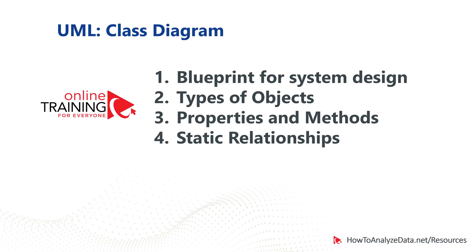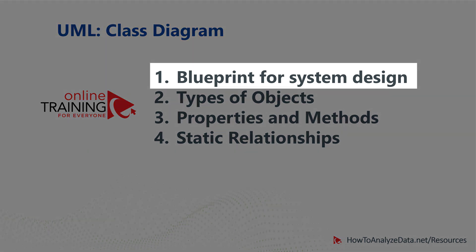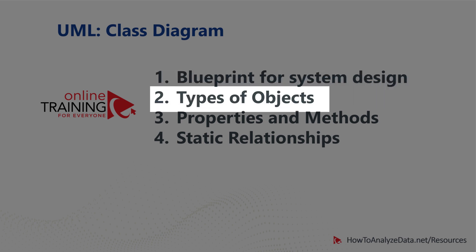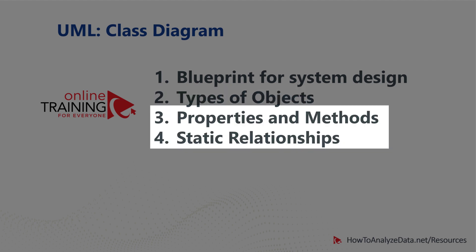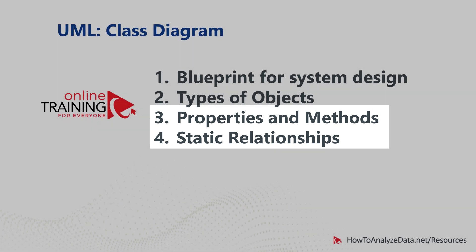What is a UML Class Diagram, and why do we need it? A UML Class Diagram is intended to provide a blueprint for an entire system design. This blueprint works very well regardless of which programming language you use to build your system. UML Class Diagram shows what types of objects you will be building, their properties and methods, as well as static relationships between objects.